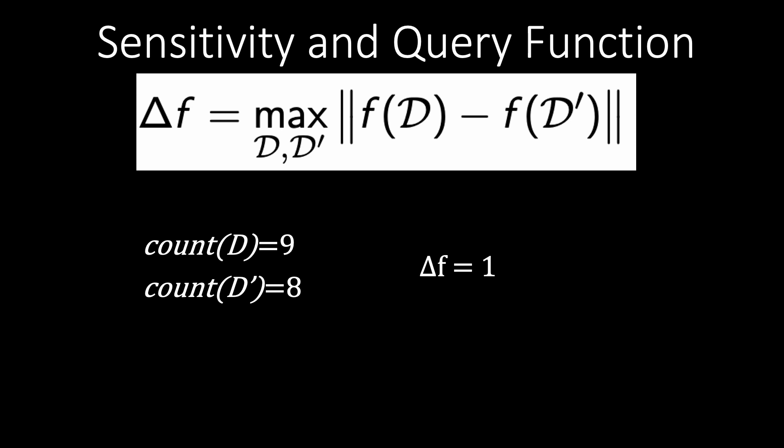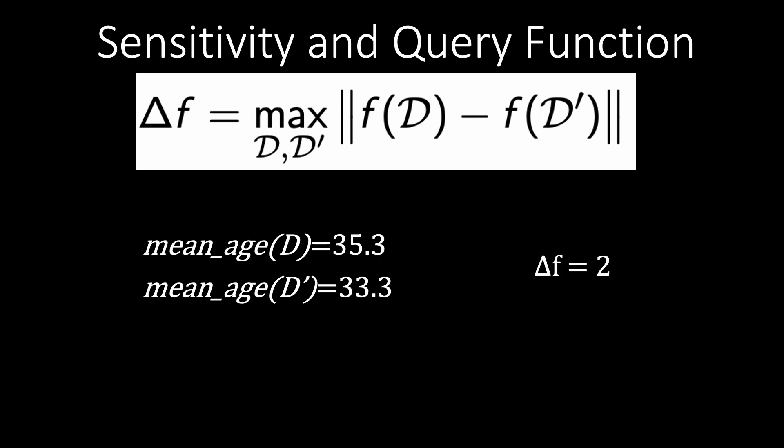Let's now look at the age. We calculated the mean age of D, the database that included everyone including Eve and her 52 years of age, at 35.3. Now calculating the mean age without Eve in D prime results in 33.3 which is the maximum change.